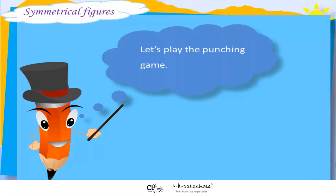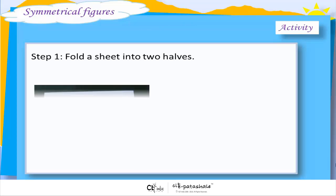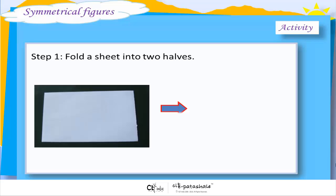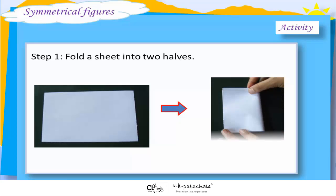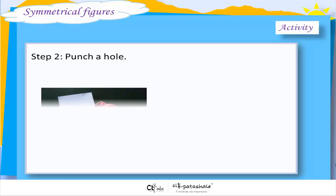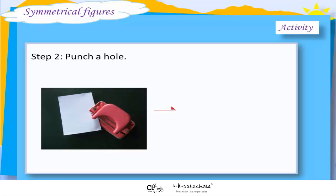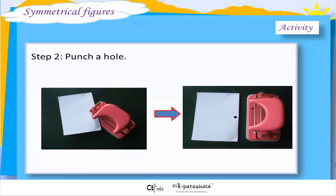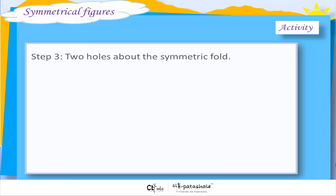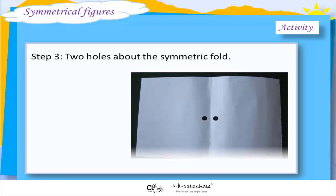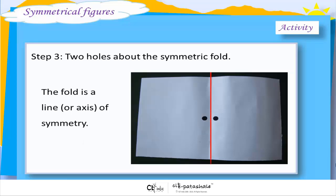Let's play the punching game. Step 1: Fold a sheet into two halves. Punch a hole. Two holes about the symmetric fold. The fold is a line or axis of symmetry.